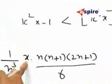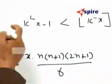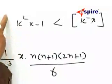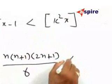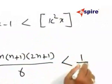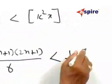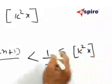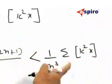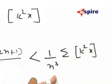x is common. Therefore, I take x outside: x times the sigma from k=1 to n. On this side, I will have less than (1/n³) times sigma k²x, because I take sigma first then divide by n³.